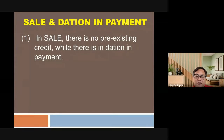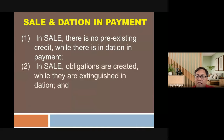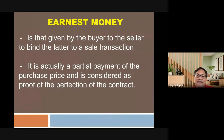There is a trend of board exam questions on the differentiation between a sale and a dacion en pago. In a sale, there is no pre-existing credit; in dacion en pago, there is a pre-existing obligation. In a sale, obligations are created; in dacion en pago, they are extinguished. In a sale, the buyer still has to pay; in dacion en pago, payment is received before the contract is perfected.